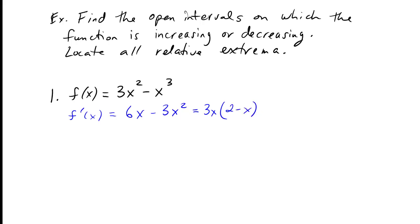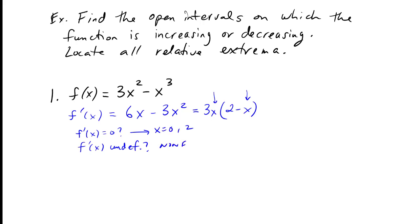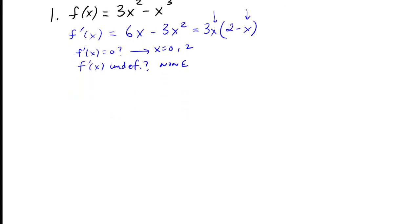Now I need the critical numbers. I'll ask: when is the derivative equal to zero, and when is it undefined while the original function is defined? The derivative is zero when x equals zero and when x equals two. There's nowhere the derivative is undefined, so zero and two are our critical numbers. There are no discontinuities of the function, so we'll go to a chart of the first derivative.